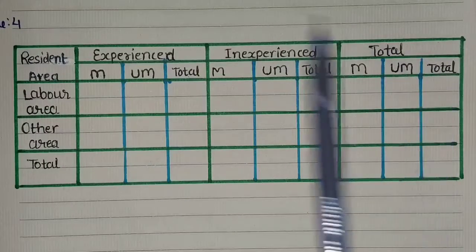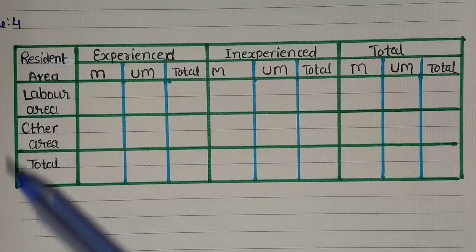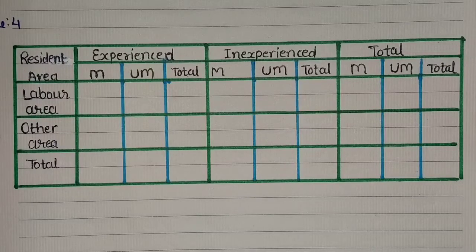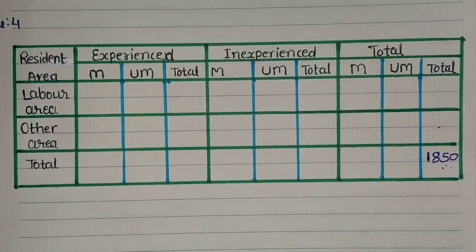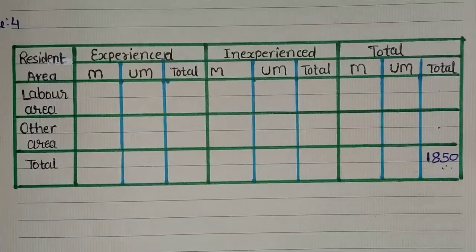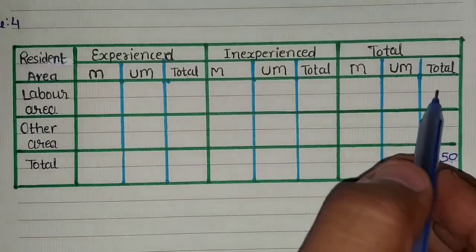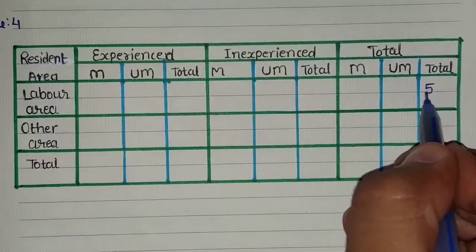Area यानि कि यहाँ पर जो women हैं वो labour area से आती हैं या other area से, उसका एक अलग attribute हमने बनाया है। तो चलिए friends अब sum start करते हैं। Our first line says out of total 1850 women working in a factory, 549 were residing in labour area. Total 1850 women हैं, और उसमें से labour area में रहने वाली 549 women हैं, so we write 549 there.